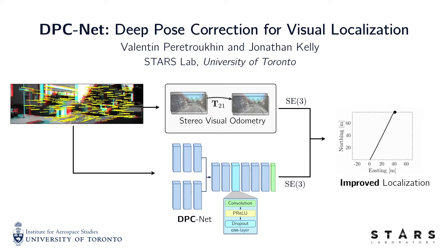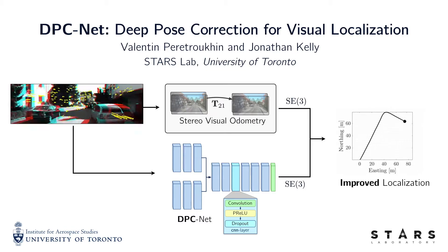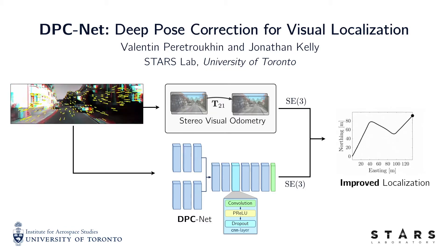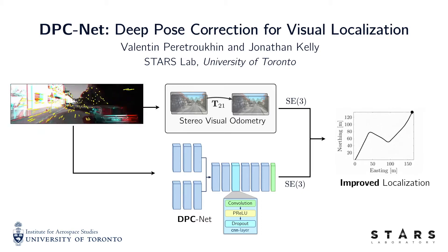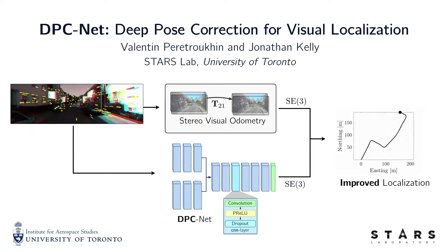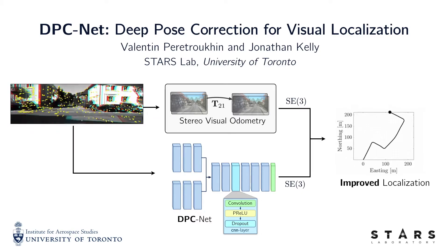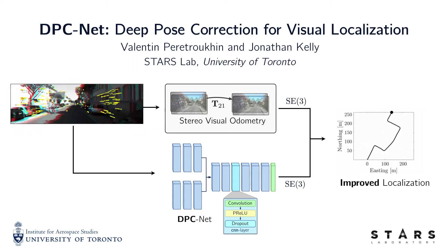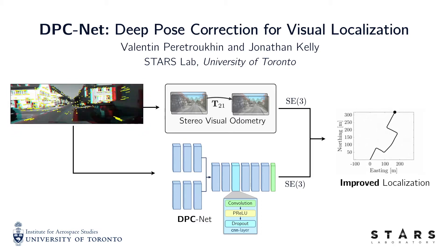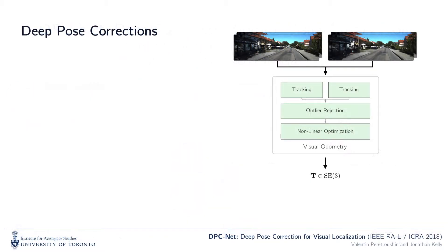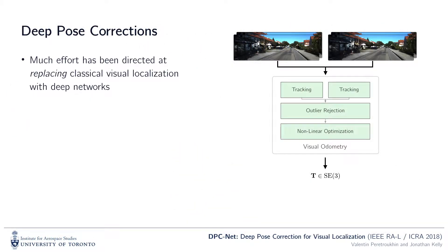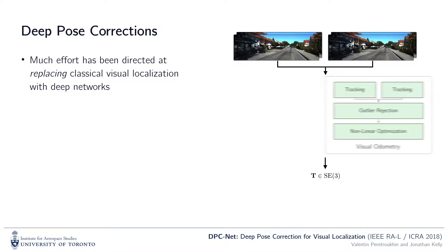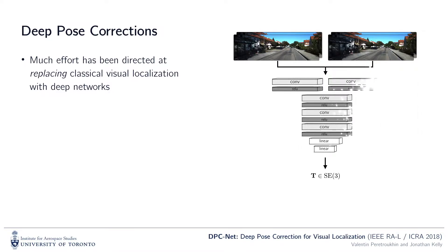We present DPCnet, Deep Pose Correction for Visual Localization, a method to fuse the representational power of deep networks with efficient classical visual localization. Recently, significant research effort has been dedicated to replacing classical visual localization approaches, like visual odometry, with monolithic deep networks.